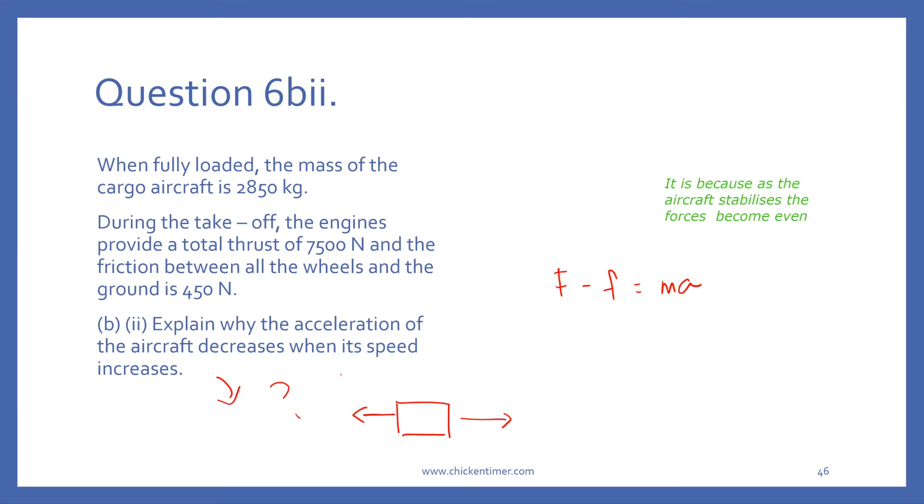What happens is you have this friction, and it is moving in the forward direction. If the speed increases, this friction will also increase. There's a forward force thrust. In this case, let's say we have a first situation where the speed is low. We have thrust of 7500, friction is 450. This is the first case. We get the acceleration as 2.47.